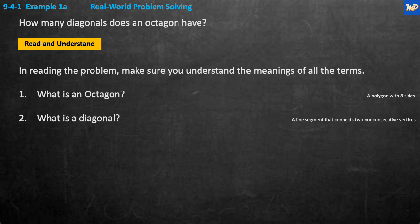Example 1a. It's a real world problem we're going to solve here. How many diagonals does an octagon have? Under read and understand, it means read your problem and make sure you understand everything you're being asked. So what is an octagon? An octagon is a polygon with eight sides. I have to try to draw one. It's got a line here, a line here, a line here. There's an eight sided figure. It's supposed to be really symmetric, but that's as good as I draw.